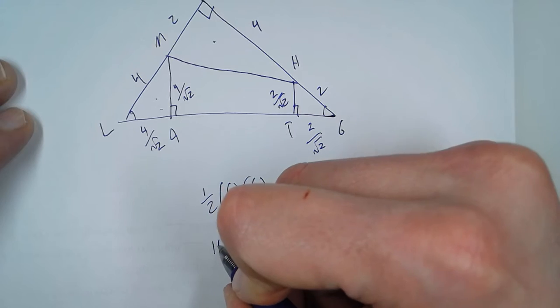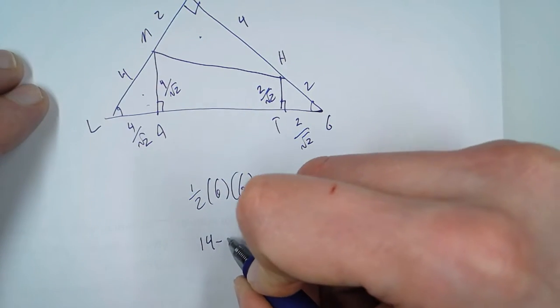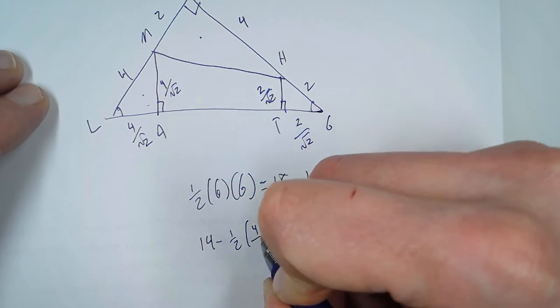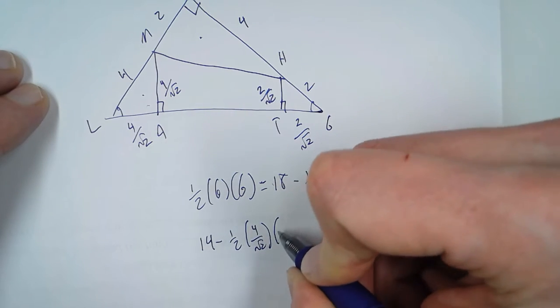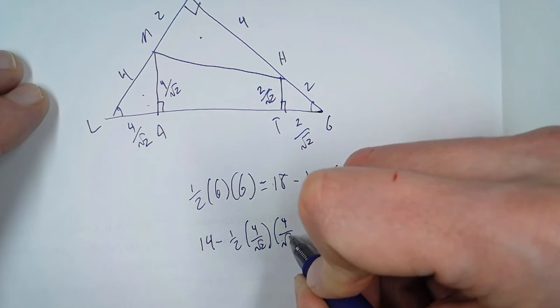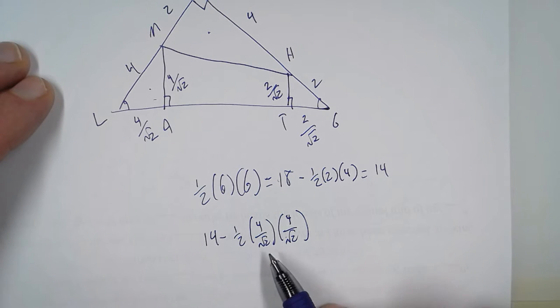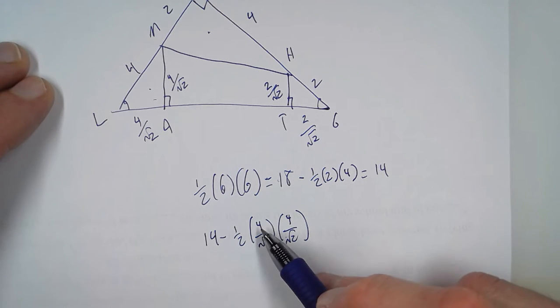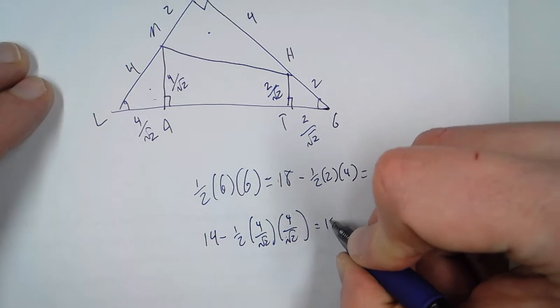So then 14 minus, we'll subtract this triangle, 1 half, 4 over radical 2, and 4 over radical 2. Square root of 2 times square root of 2 is 2, times 2 is 4. That cancels one of the 4s, so that means we're left with 10.